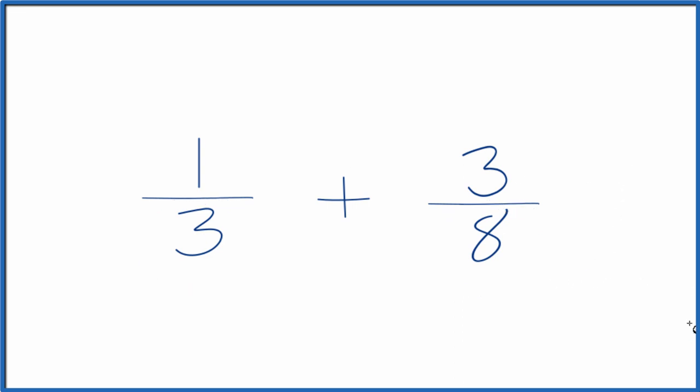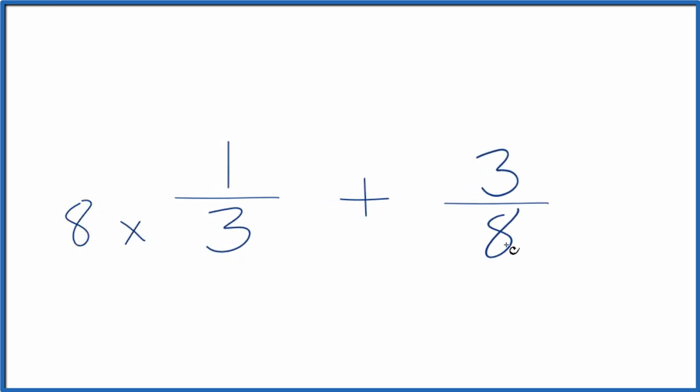So probably the best way to do this, find something that 3 and 8 both go into. And I could just multiply 3 times 8. And then over here, 8 times the 3. Because when I do that, I'll get 24 for both of these. That would be a common denominator.